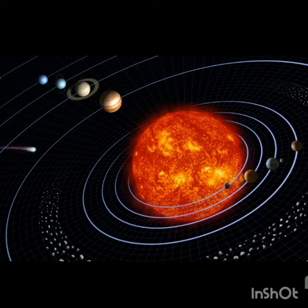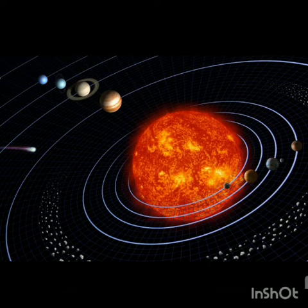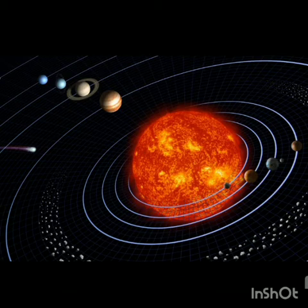The first planet from the Sun is Mercury. It is not very easy to observe since it is always close to the Sun in the sky. It looks like the Moon. Its surface is covered with impact craters. It has no atmosphere and no water.